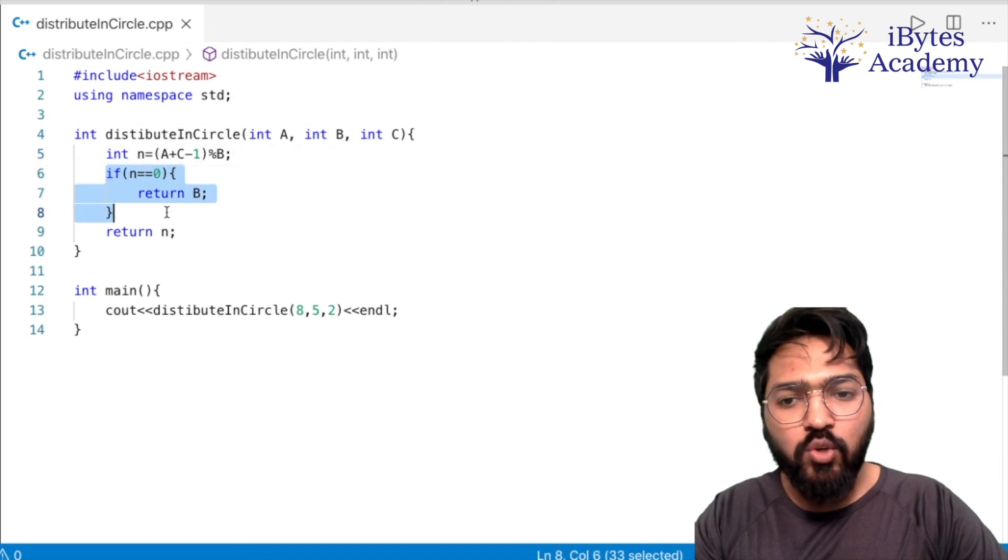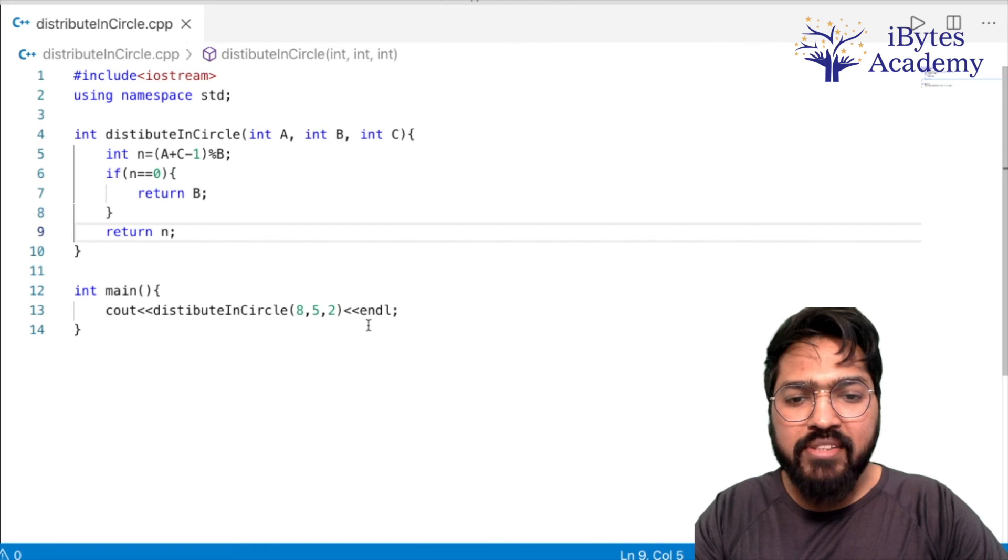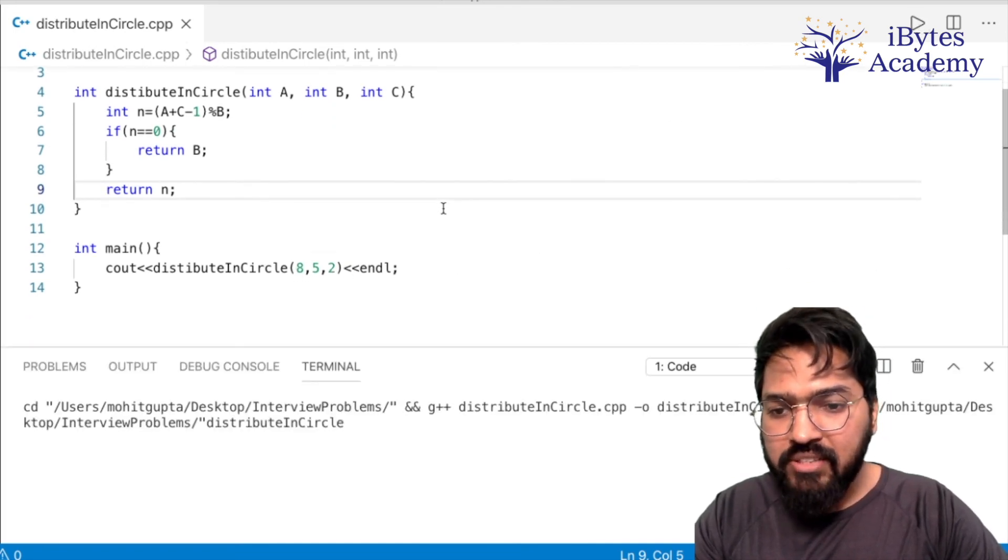So int n equals A plus C minus 1 modulo B. Aur jo abhi abhi maine bataya tha ki agar value 0 ho jati hai to humko return B karna hai, otherwise humko return n karna hai. Aur hamari same input that is 8, 5, 2, is pe hum log check kar lete hain. We should get 4 as the answer.